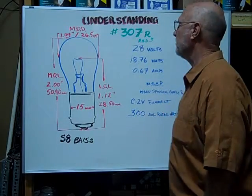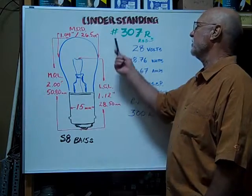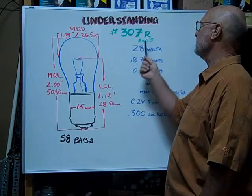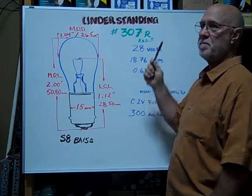Hi, here at Bulbtown we want to help you understand and identify the number 307 par. The R designates that it is a red painted bulb.